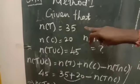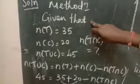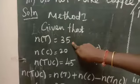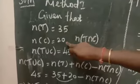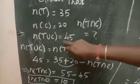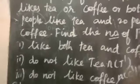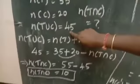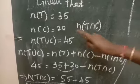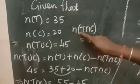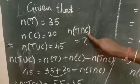What is given? N of T — number of tea likers — is 35. Number of coffee likers is 20. The whole party is 45 people. So N of T union C is equal to 45. We have to find out N of T intersection C.